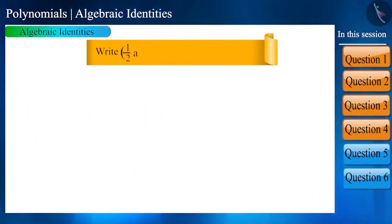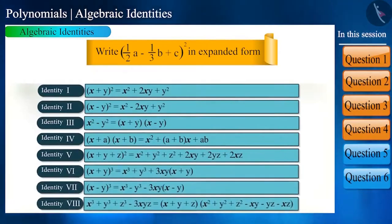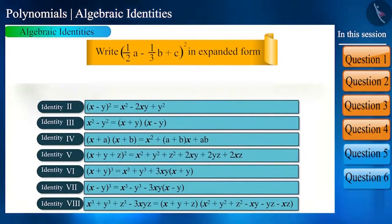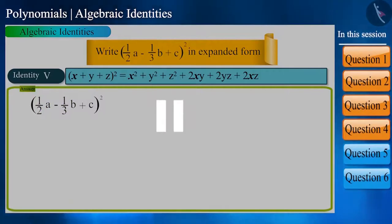Now, write (1/2a - 1/3b + c) whole square in an expanded form. Here, which identity will we use? Yes, identity 5. Here, x is 1 by 2a, y is minus 1 by 3b and z is c. This is quite easy. Solve it yourself and see whether you are getting the right answer.